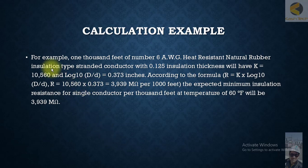Let's calculate now minimum required insulation resistance. For example, 1000 feet of number 6 AWG heat resistant natural rubber insulation type stranded conductor with 0.125 insulation thickness will have K equal to 10,560.